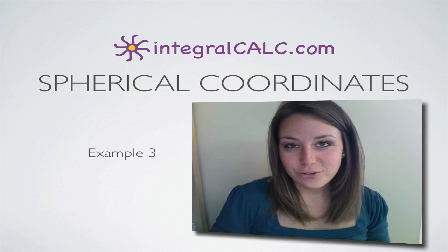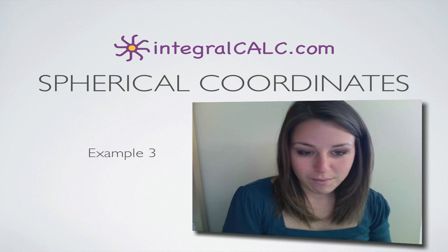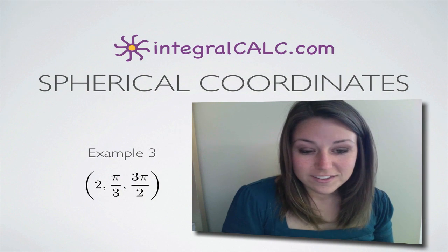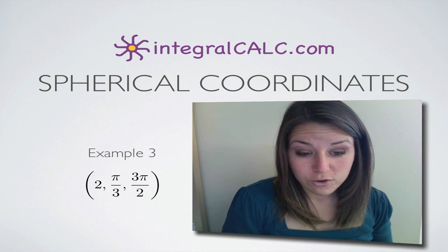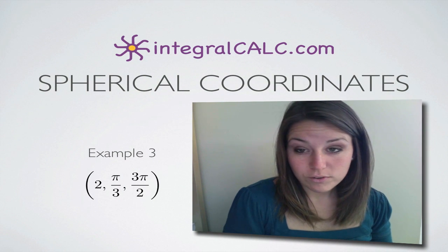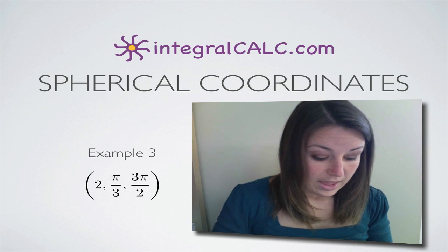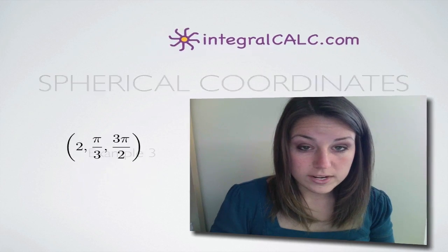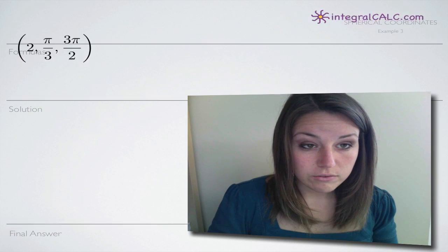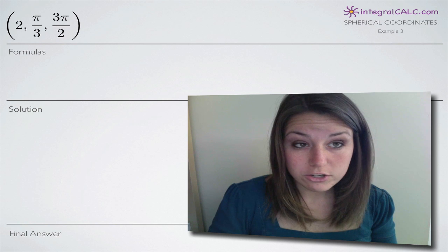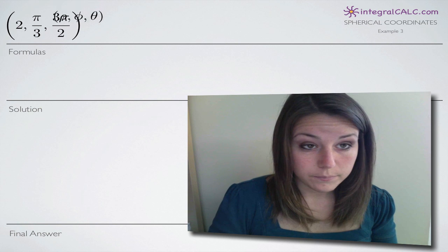Today we're going to be doing another spherical coordinates problem. The coordinates that we're given are 2, pi over 3, and 3 pi over 2. We're going to be taking these spherical coordinates and converting them into rectangular or Cartesian coordinates.